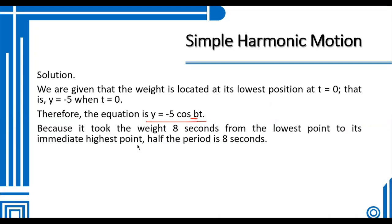Because it took the weight 8 seconds from the lowest point to its immediate highest point, this is half the period. So one half times 2π/b equals 8. Half of 2π/b, by simple manipulation, the 2's cancel out, so we have b equals π/8. So the constant b is π/8.